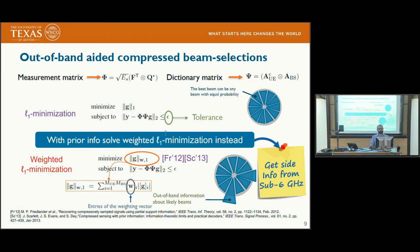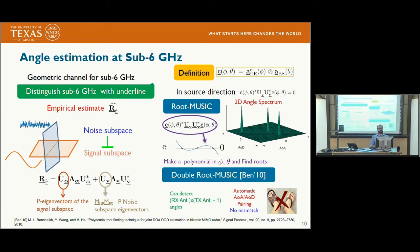If you have prior information coming from sub-6 GHz, you could instead solve an alternative problem that minimizes the weighted L1 norm, where the weights capture the prior belief about the active elements in the support — specifically, you penalize more likely entries less in this optimization. The question is how to get the weighting vector from sub-6 GHz information. We assume access to the sub-6 GHz covariance matrix, which is easy to obtain because there are no hardware constraints, and we pursue a subspace-based algorithm to find the mean angles of arrival of the rays.